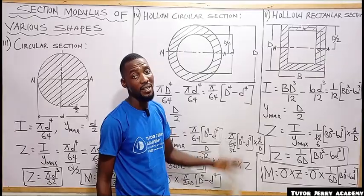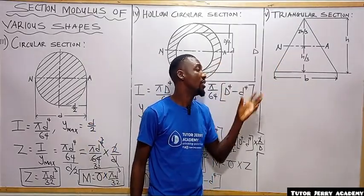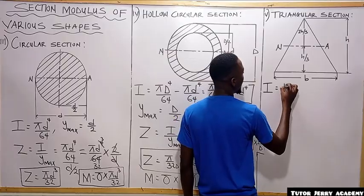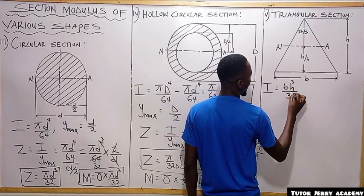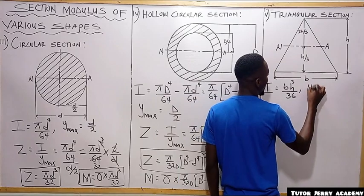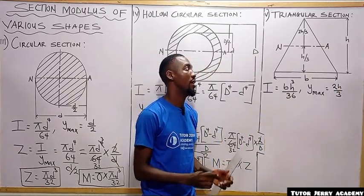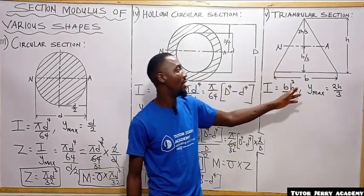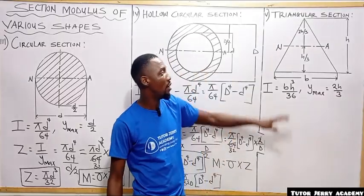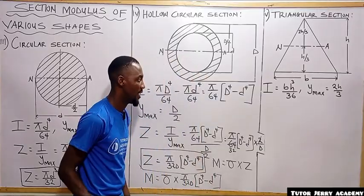Now we consider a triangular section. The moment of inertia about the neutral axis is I = bh³/36, and y_max about the neutral axis is 2h/3. Note that about the base, I = bh³/12 and y_max = h, but here we are considering it about the neutral axis.